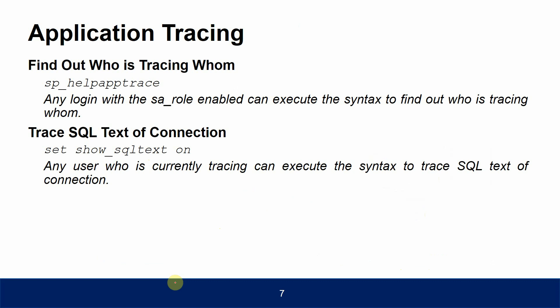To find out who is tracing whom, you can use 'sp_help_app_trace'. Any login with SA role enabled can execute this syntax. To trace the SQL text of a connection, use 'set showsql text on'. Any user who is currently tracing can execute this syntax to trace the SQL text of the connection.